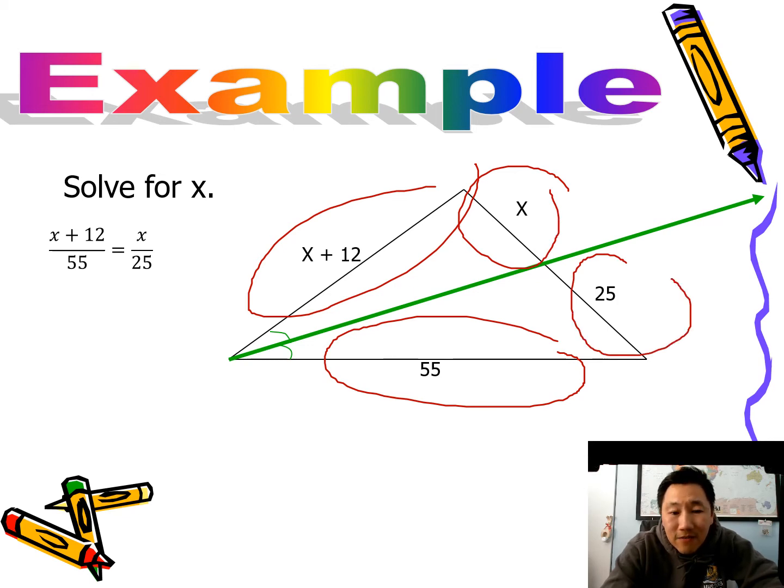And then from here it's pretty easy. Just cross multiply, use your pre-algebra skills, distribute, solve basic algebra. You should get X equals 10.